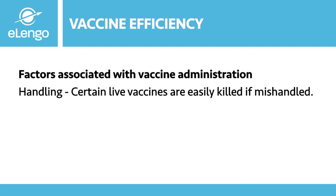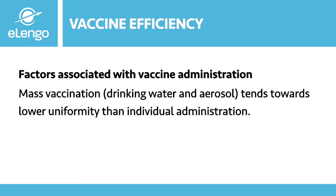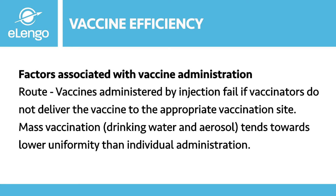Factors associated with vaccine administration: how you handle the vaccines, as earlier discussed, is very important. Maintaining that cold chain during the process of vaccination is of paramount importance. Vaccines should be handled carefully to avoid contamination and breakage, which in turn would reduce the efficiency of the vaccination. Using chlorinated water — we've already mentioned this — chlorinated water will affect the vaccination process, so avoid using chlorinated water.